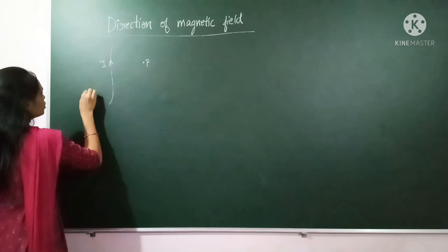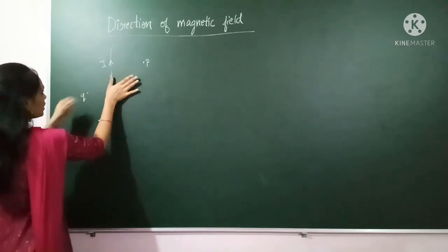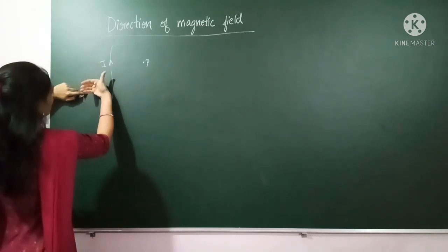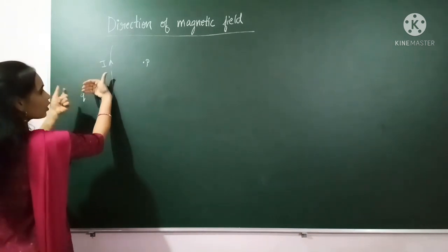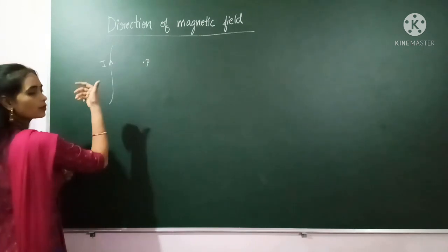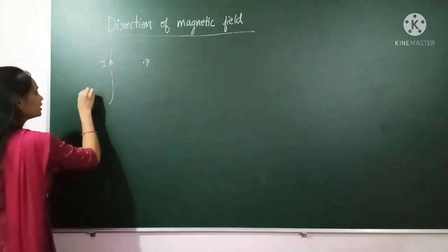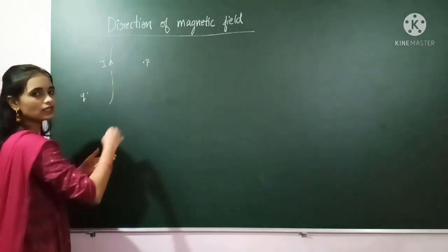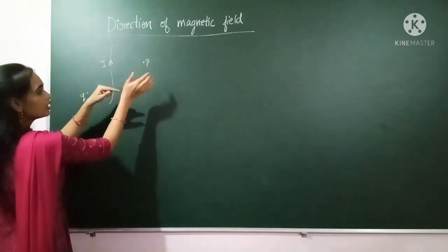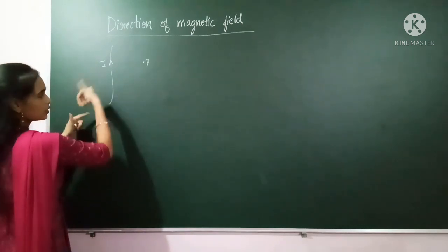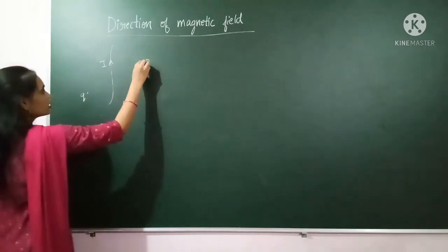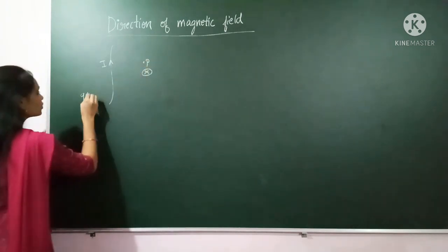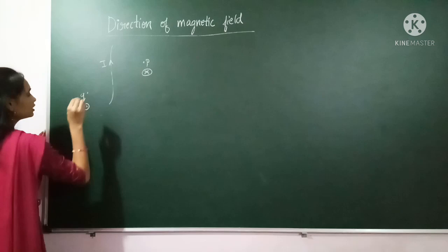Now suppose we take point Q. Again, I place the thumb in the direction of current and curl the fingers — at point Q the fingers are pointing outward. So if the fingers are pointing outward, the magnetic field is outward at point Q. The inward magnetic field can be represented by a cross, and the outward magnetic field is represented by a dot.